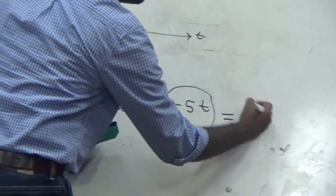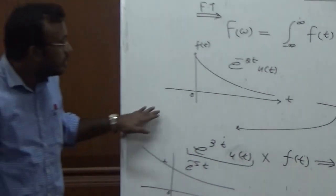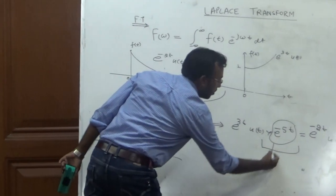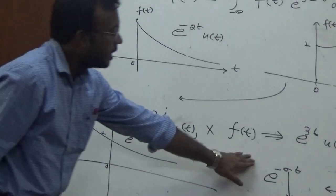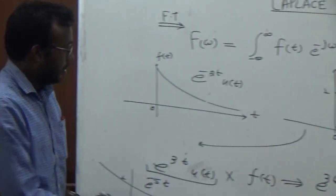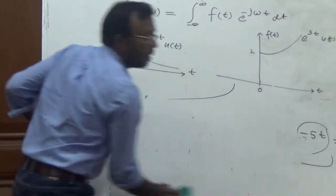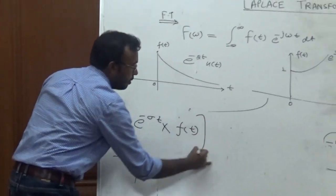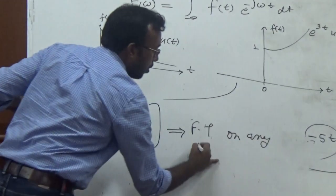So, after the multiplication, we can get an absolutely integrable signal — this is a totally convergent signal. After multiplying by the constant term e^(-σt), we can find the Fourier Transform of a non-integrable signal by converting it into an absolutely integrable signal. This term is represented as e^(-σt), where sigma is any constant term. By introducing this e^(-σt) term, we can find the frequency domain of any type of signal — whether converged or not converged. If we multiply any signal by e^(-σt), then we can find the Fourier Transform of any type of signal, integrable or non-integrable.